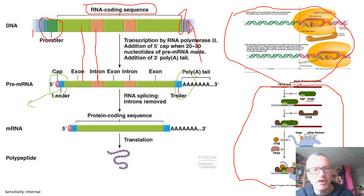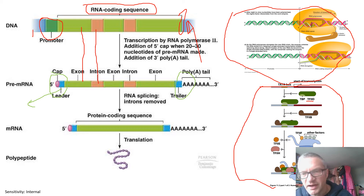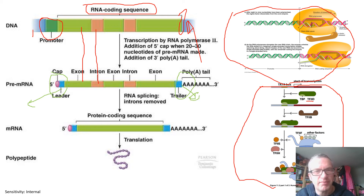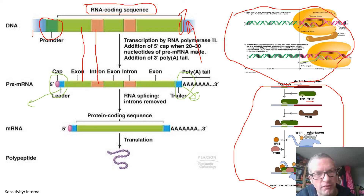We also have the three prime untranslated region which contains the polyadenylated tail, and this protects against three prime exonuclease activity. It is also important in navigating the messenger RNA to the correct part of the cell where translation can take place. We described both of these — their molecular structure and their functions — on individual slides in the lecture.